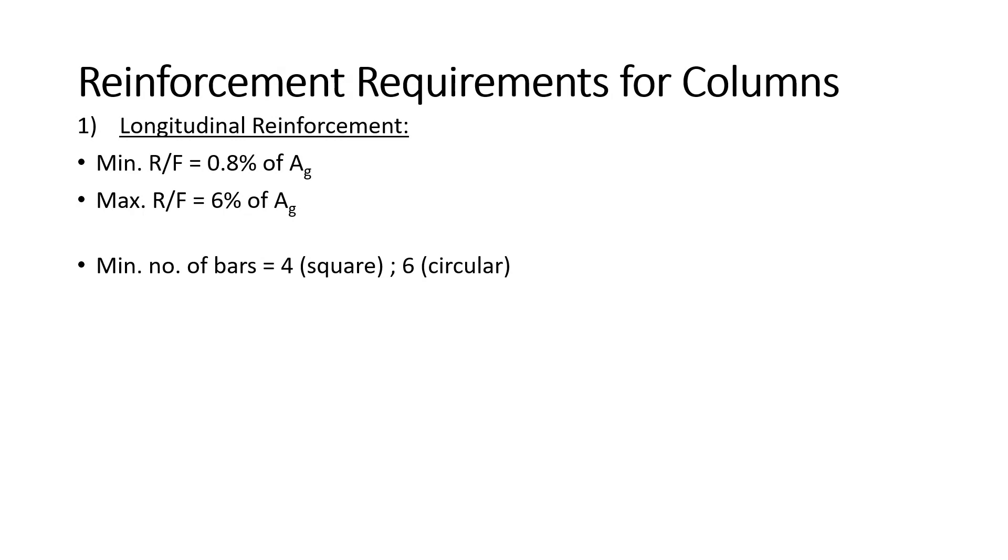The minimum number of bars for columns, if it is a square column then it is 4 and for a circular column it is 6 and the minimum diameter of bar is 12 mm. The spacing of these longitudinal bars should not exceed 300 mm in any case.